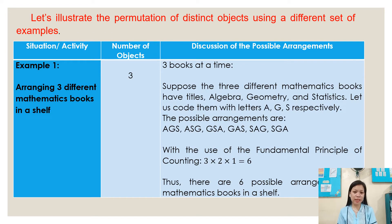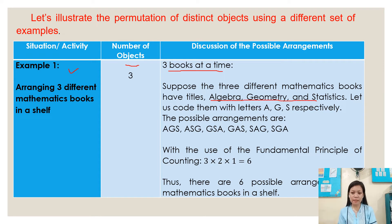Let's illustrate the permutation of distinct objects using a different set of examples. Example number one: arranging three different mathematics books in a shelf. The number of objects is three. Suppose the three different mathematics books have titles Algebra, Geometry, and Statistics. Let us code them with letters A, G, and S respectively.